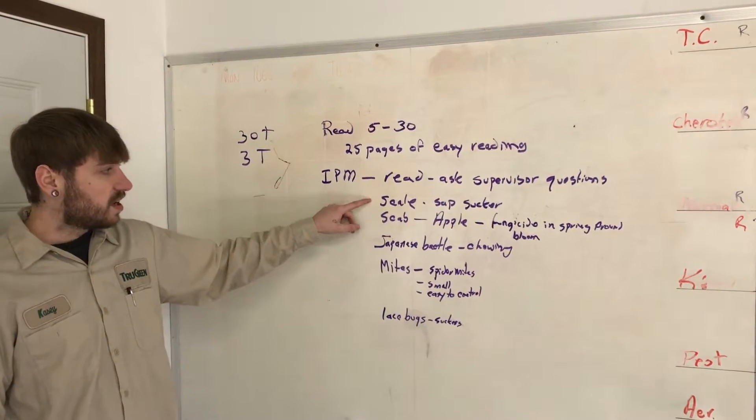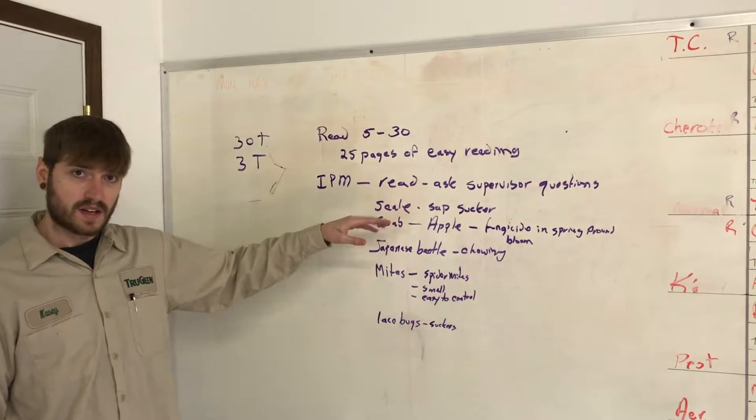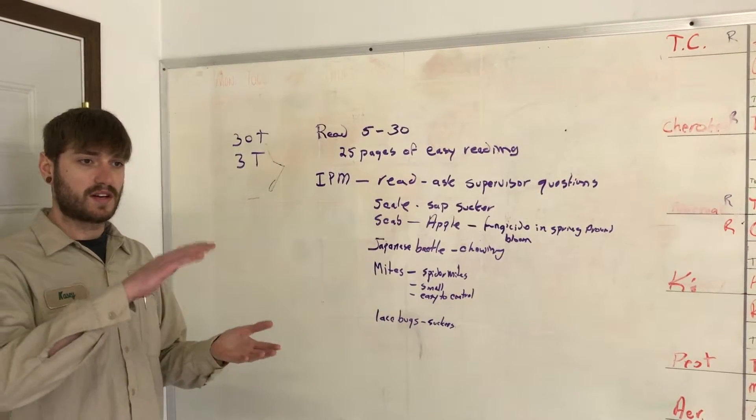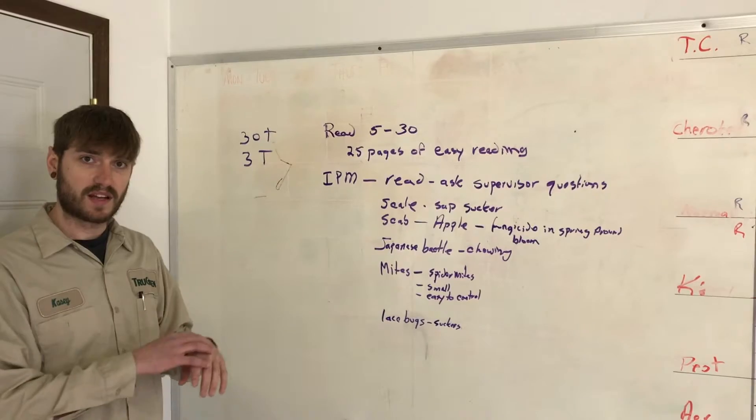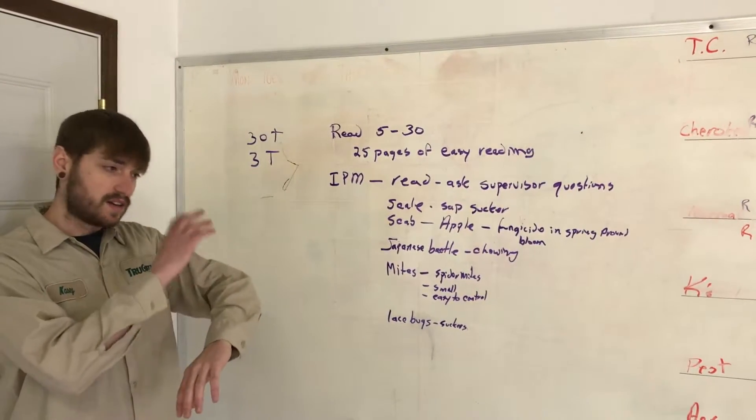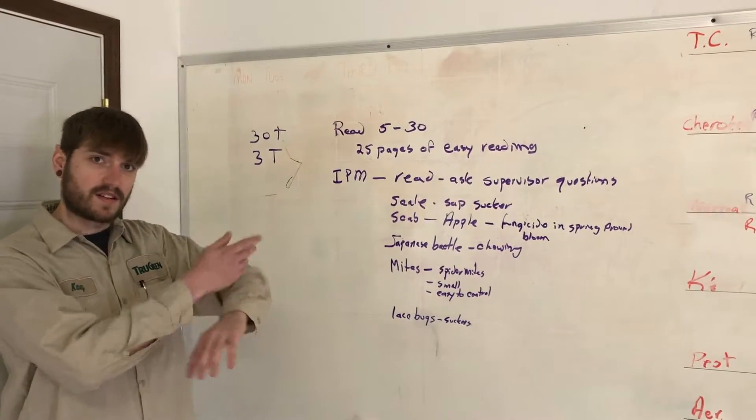It talks about scales. Scales are sap suckers. They live on the leaves and on the stems of the plants. They attach to it and just sit there and suck on the plant.